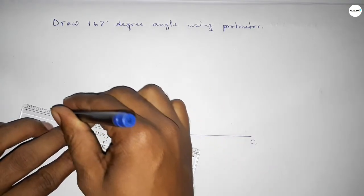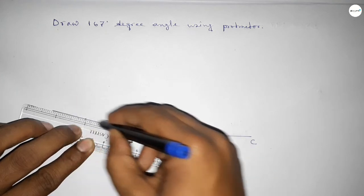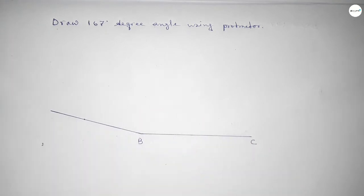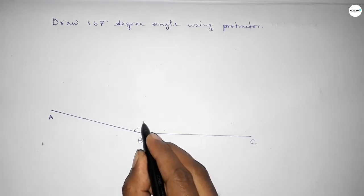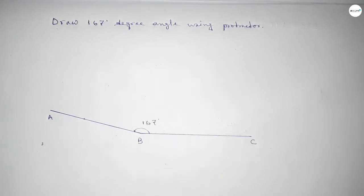So joining this and taking here a point A, so angle ABC up to this, this is 167 degree angle.